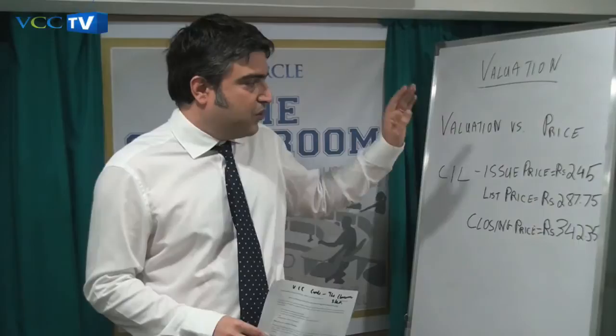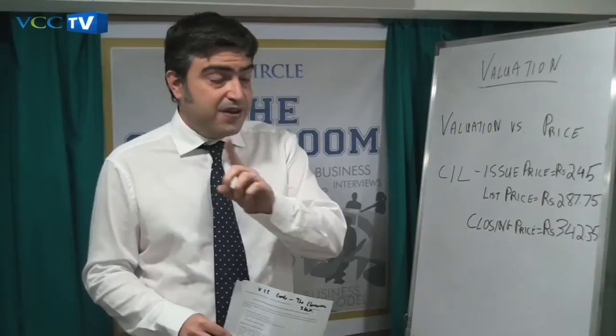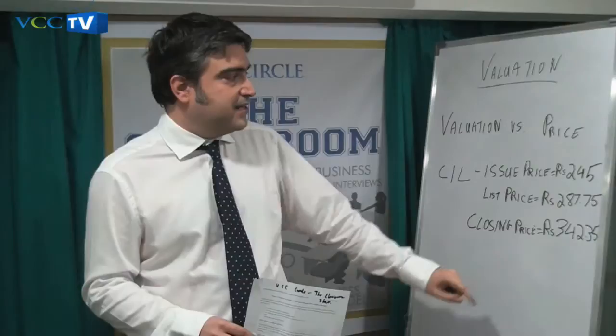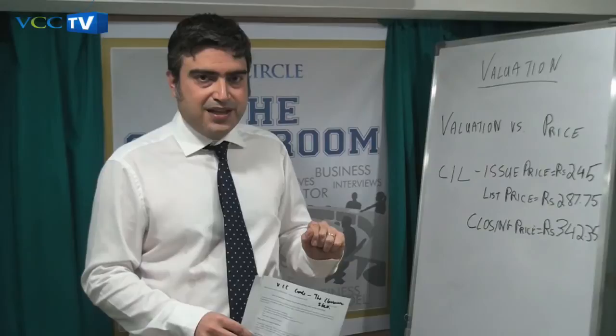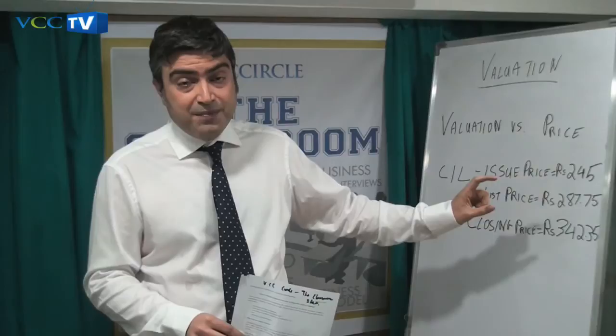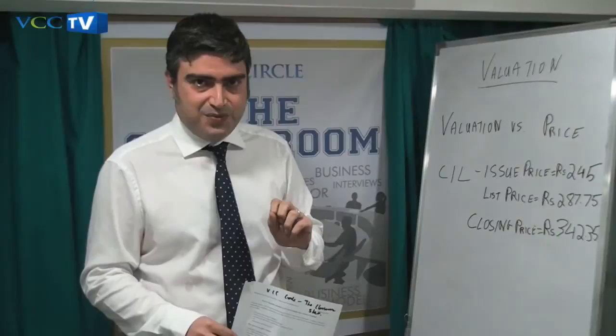Let me give you an example. Recently in the Coal India IPO, Coal India priced their shares at 245 rupees. The shares however listed at almost 288 rupees, and in fact closed on the first day of trading at 342 rupees and 35 paise — a substantial difference from the list price. This 342 rupees may not have been reflective of the valuation that was actually reached, or it may have been reflective of the valuation that investors felt the company was actually worth.